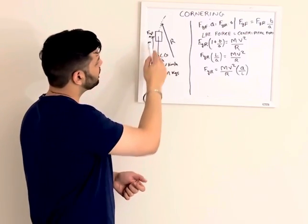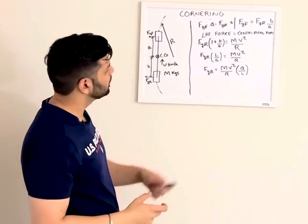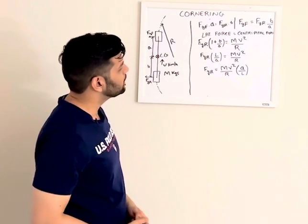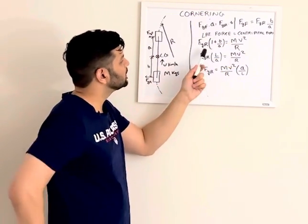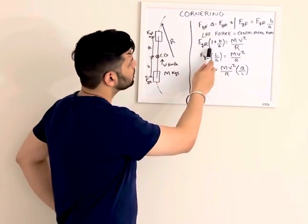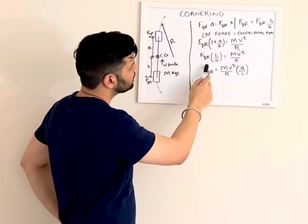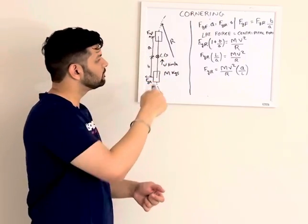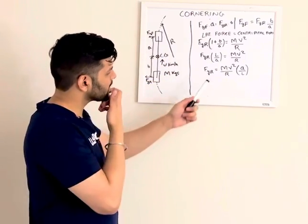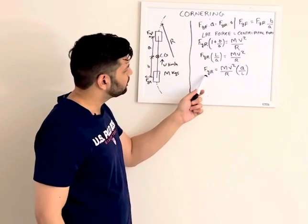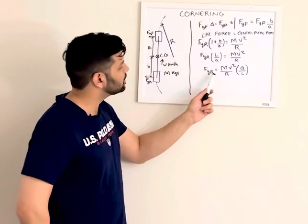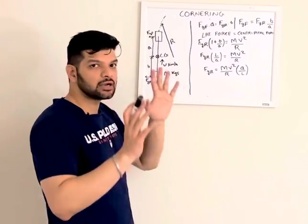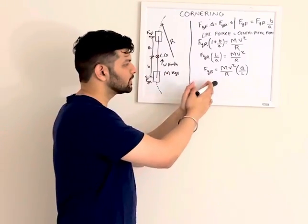And this centripetal force will be countered by the lateral force generated on the front and the rear tires. So the combination of this, FYF plus FYR, but we know FYF is equals to FYR times B by A. So if we use this equation, we will get FYR times 1 plus B by A. Rearranging, we get it L over A. L is the wheelbase of the bicycle model we are considering over here, equals to V² by R. Further rearranging gives us FYR is equals to Mv² by R, A by L.